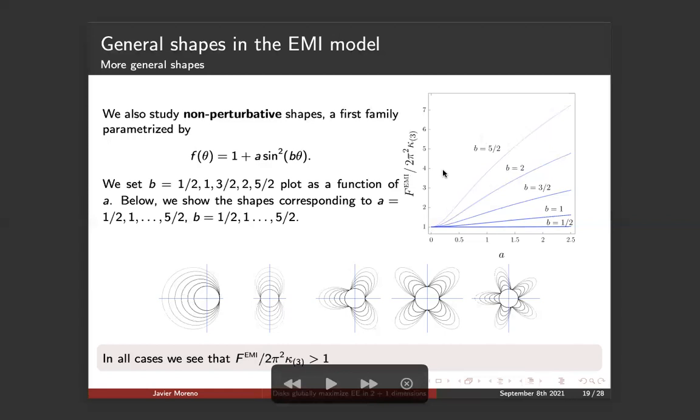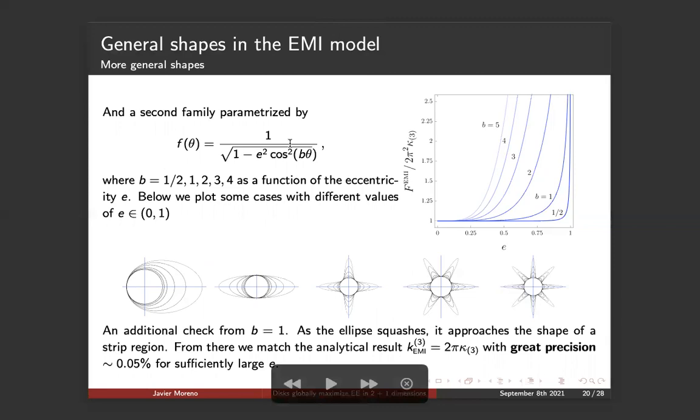In all cases, we plot F of EMI over the case of the disk. And we see always that we are getting values that are very close to one, but always greater than one, or as A increases, much greater values. Another family that we can parametrize using the eccentricity. And B here, again, for different values are given these different figures. And for the running of the eccentricity, we'll do the gray shapes. Plotting them again, we find exactly the same conclusions.